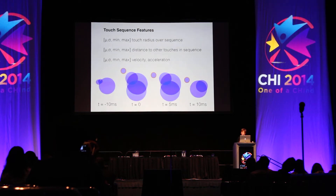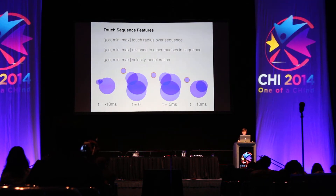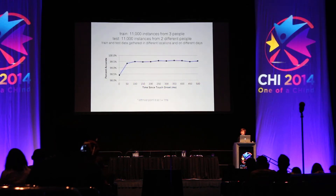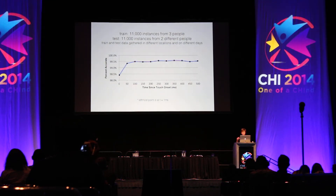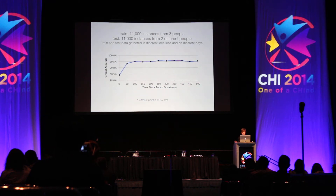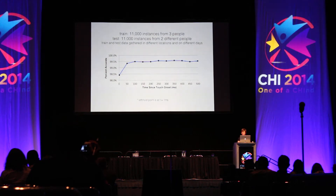Using these features and a few others described in the paper, we trained a series of decision trees using a sequence of increasingly larger touch windows. As you'd expect, the longer you wait, the higher your accuracy. Right away when you touch the screen, you get about 98.5% accuracy, but that isn't good enough given the high rate of palm touches per second. However, if we wait a quarter of a second, we can cut our error rate by about 70%, and waiting longer doesn't get much more.